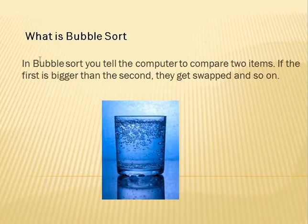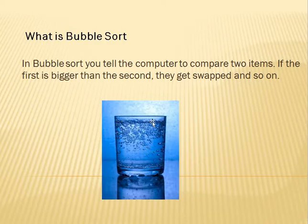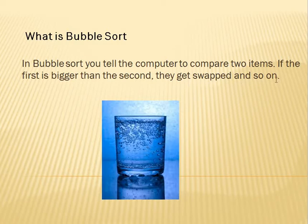Now let's move towards our topic, which is basically bubble sort. Bubble sort is basically an algorithm to sort things. Bubble sort — you tell the computer to compare two items: if the first is bigger and the second is smaller, they get sorted. The main concept of bubble sort is that we compare two items with each other — if the first item is bigger than the second, we sort it. If not, then we do not sort the item. So this is called the bubble sort.